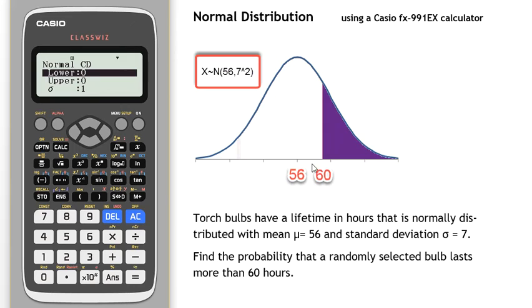At this point I need to put in a lower value and an upper value for the region I'm interested in. Well the lower one is 60. Hit the equals button.